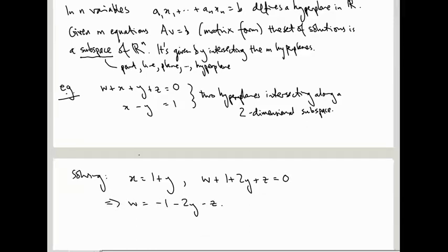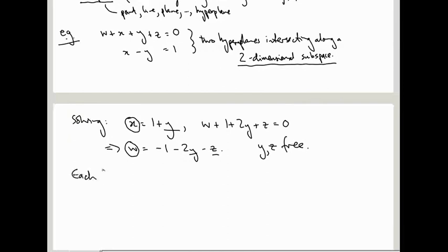overall we have two dependent variables x and w and two free variables y and z, and the fact we have two free variables is what tells us that we have a two-dimensional subspace of solutions. Each free variable is a coordinate on the space of solutions.